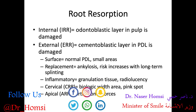A brief review of root resorption: internal root resorption is where the odontoblastic layer in the pulp is damaged, and external root resorption is where the cementoblastic layer in the PDL has been damaged. Pathologic root resorption can certainly happen after traumatic dental injury. The various forms of external root resorption include surface replacement — essentially ankylosis — as well as inflammatory, cervical, and apical resorption. These are useful definitions to know for the board exam.